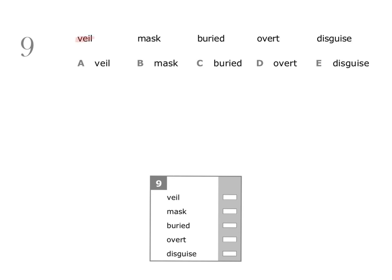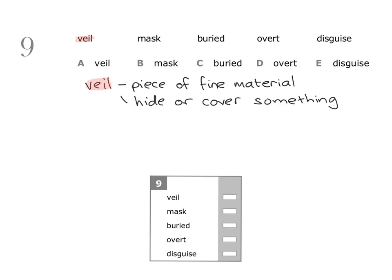A veil can be a piece of fine material, often worn by brides on their wedding day. Veil can also mean to hide or cover something so you cannot see it clearly. For example, if fog veils the city, that means the fog covers the city and hides it, making it difficult to see.